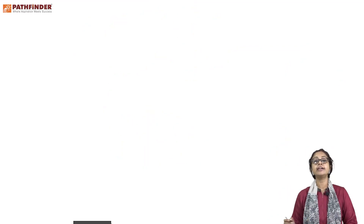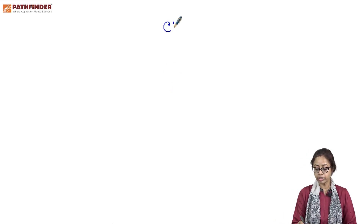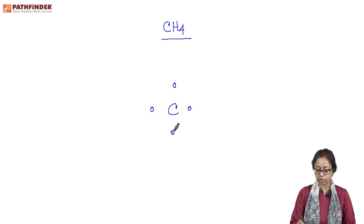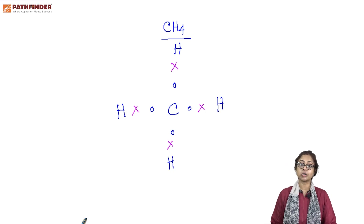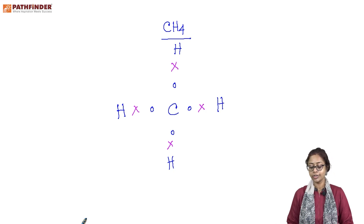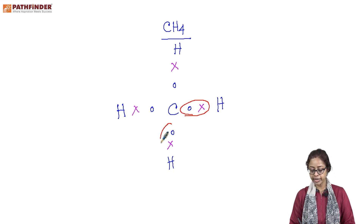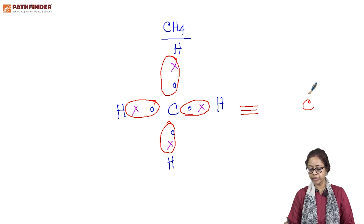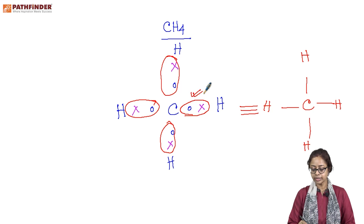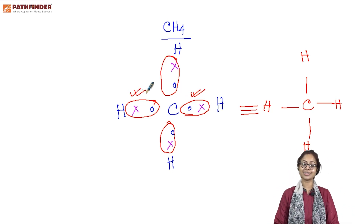For covalent bonding I'll pick up a simple example — methane, with the formula CH₄. The mistake you all make is not always in the count of valence electrons; you show the atoms correctly and their valence electrons also correctly, but some of you make the mistake of showing a transfer of electrons. In covalent bonding there is no electron transfer — you have to show the mutual sharing of electrons between the carbon and the hydrogen. This leads to the formation of four single covalent bonds. This is all that is important to get your full marks in ICSE. Thank you.